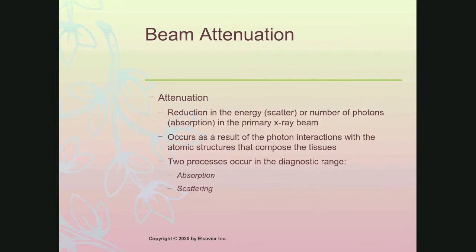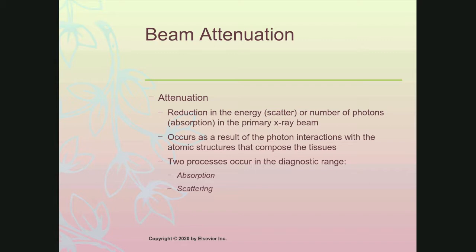Beam attenuation is a reduction either in quantity or energy of the photon as it passes through matter. When there's a reduction in energy, you're talking about Compton scatter — it comes in with a certain amount of energy, interacts with the part, gives up some of its energy, and continues in a different direction with less energy. A reduction in quantity or number of photons would be photoelectric absorption, because once that photon gets absorbed it no longer exists, reducing the overall number of photons.